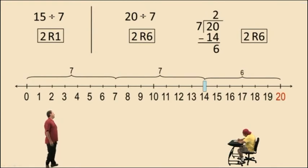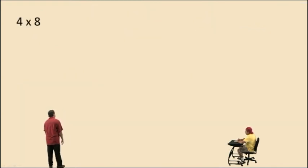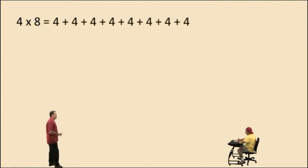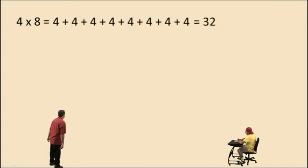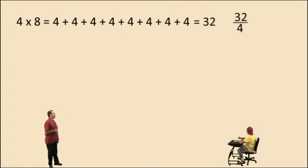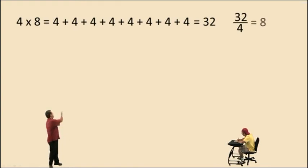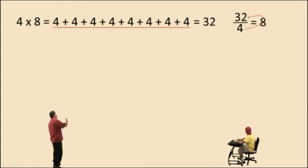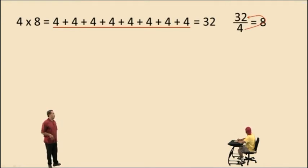Let's try this one: 4 times 8. 4 times 8 means you have 8 of these 4's being added together, and that's 32. So think of this: 32 divided by 4. How many 4's go into 32? Well, 8 — it's right there. That's because 4 times 8 is 32. That's how you can check your answer.